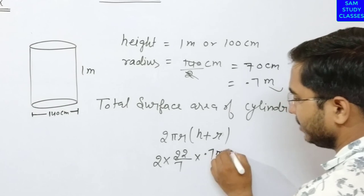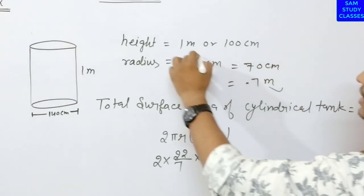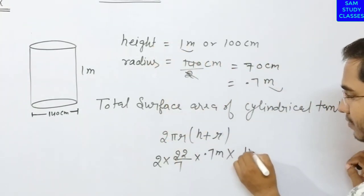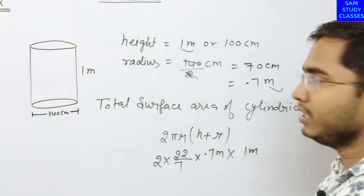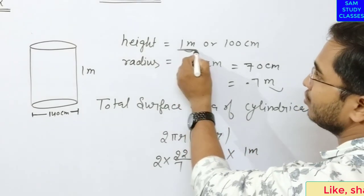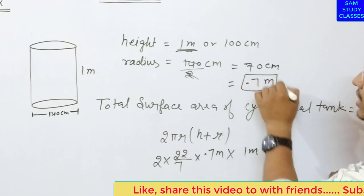0.7 meter into... what will be the height? 1 meter. Because I am calculating this in meters, so I'm keeping the unit in meters.